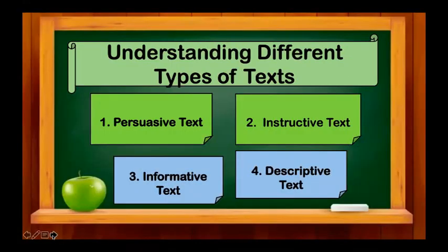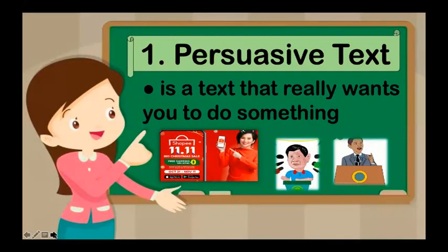Now let's go to the different types of text. Based on the examples provided, we have four specific types: persuasive, instructive, informative, and descriptive. When we talk about persuasive text, it is a type of text that really wants you to do something — it encourages you to act, and the example we provided is your advert.